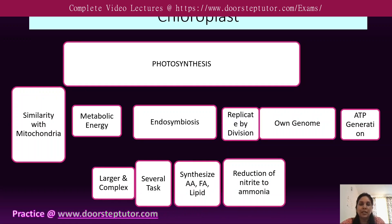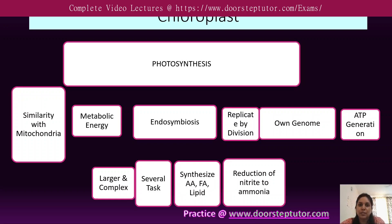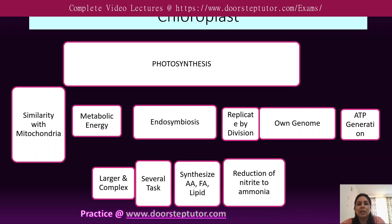First, we will discuss the main key features of the chloroplast. We all know that chloroplast contains various pigments such as chlorophyll, which are green in color and are responsible for performing photosynthesis. Photosynthesis means light is converted into carbohydrate.